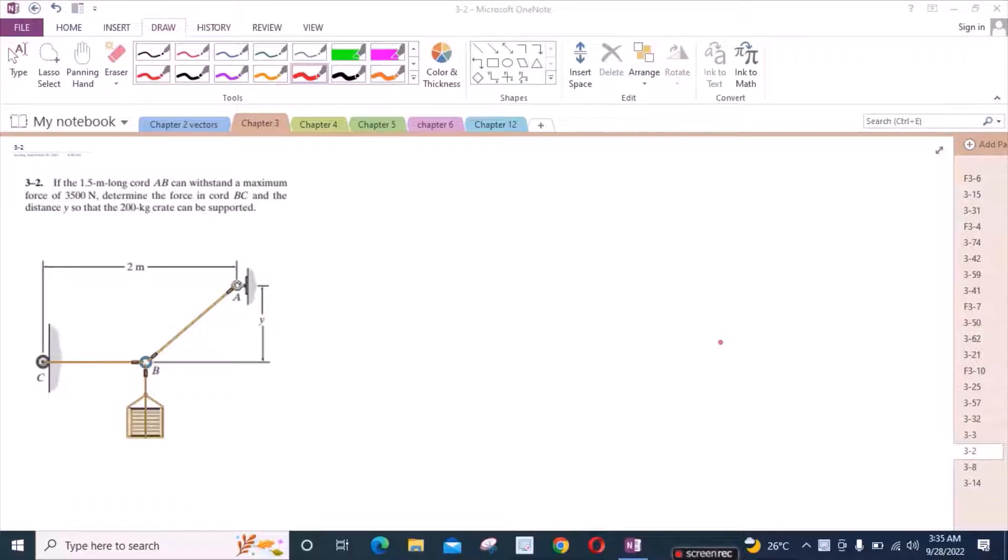Welcome back to the Solutions Manual. In this video, we will solve problem 3-2 from R.C. Hebeler engineering statics third edition. According to this problem, if the 1.5 meter long chord AB can withstand a maximum force of 3500N, determine the force in chord BC and distance Y so that a 200 kg crate can be supported.